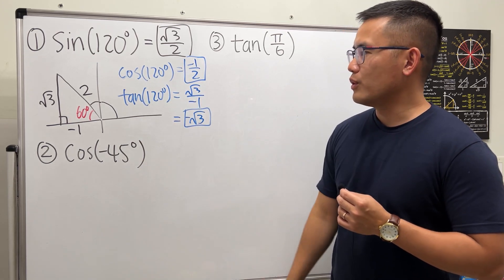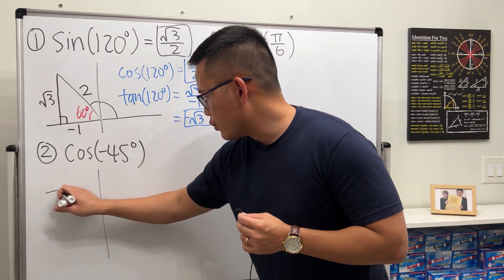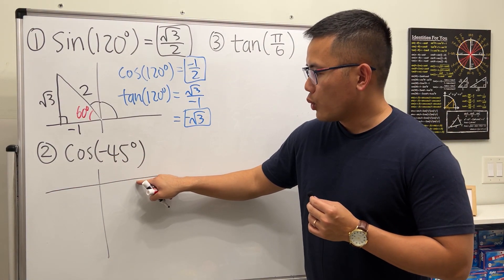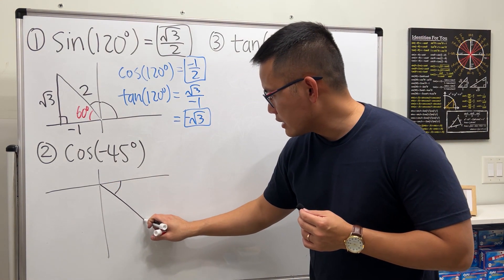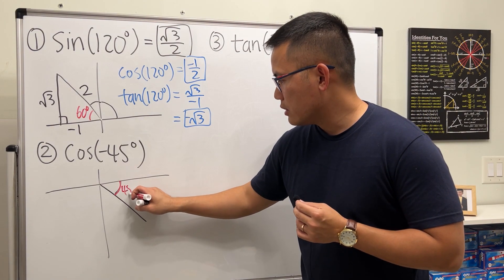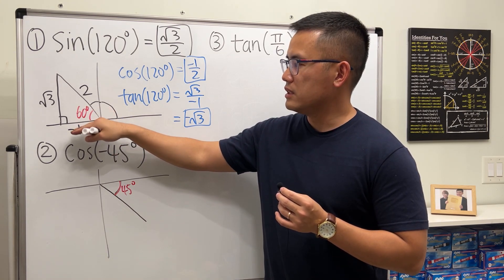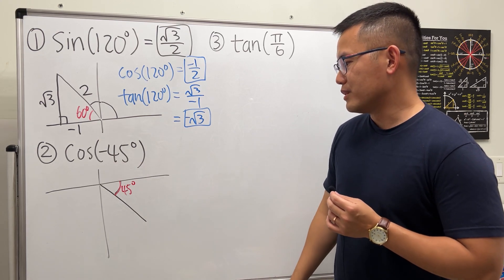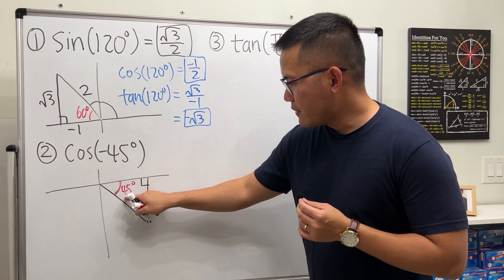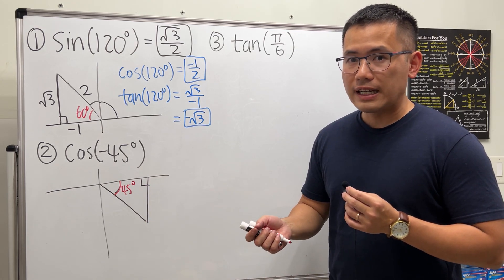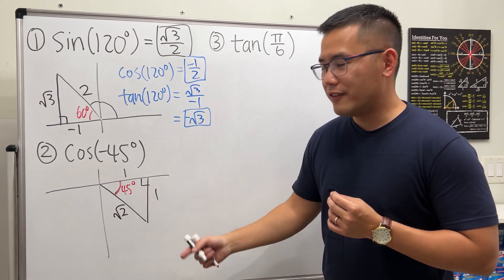Tangent is technically y-value over x-value: √3 over negative 1, which simplifies to negative √3. That's tangent of 120 degrees. Next: cosine of negative 45 degrees. I'll draw a reference triangle. A negative angle means we go clockwise, so we draw something like this — this is negative 45 degrees. The reference angle is 45 degrees, and we have a 45-45-90 special right triangle with side ratio 1, 1, √2.